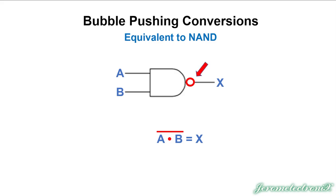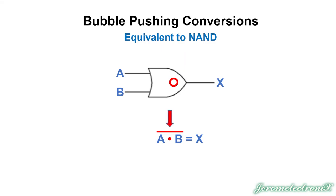Bubble pushing means you push that bubble from the output toward the input. As it goes through the gate, it does two things: it flips the gate to its opposite, and it splits and puts NOTs on both inputs. As I push it in, it's going to flip that gate — an AND becomes an OR. Then the bubbles go, we change the sign to make the equivalent. We've changed the sign and the gate.